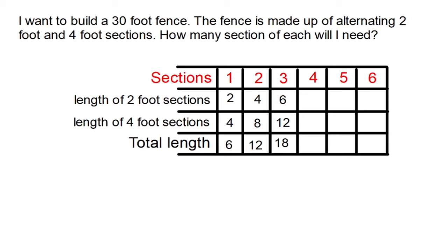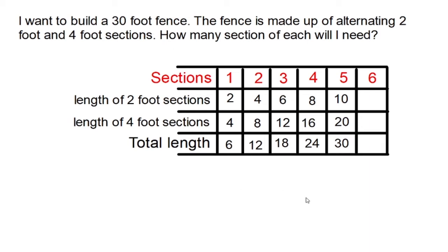If I use four sections, my 2-foot sections will take up 8 feet, my 4-foot sections will take up 16 feet, and that would be a total of 24 feet of fence. If I use five sections, my 2-foot sections will take up 10 feet, my 4-foot sections will take up 20 feet, and that will be a total of 30 feet altogether. Now 30 feet is exactly what I'm looking for. To make a 30-foot fence, I will need 5 sections of each — 5 two-foot sections and 5 four-foot sections.